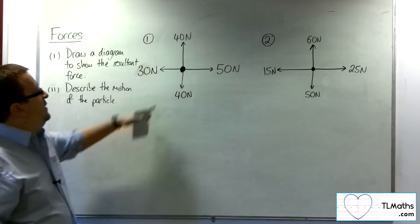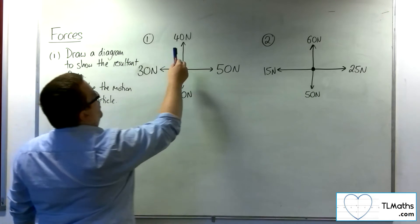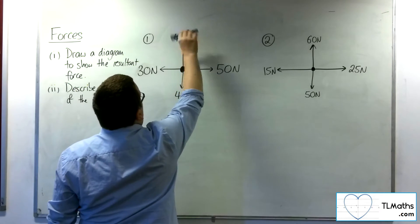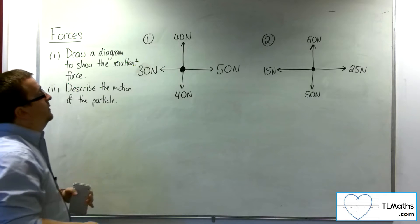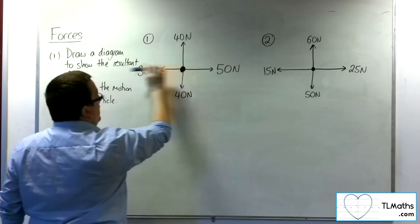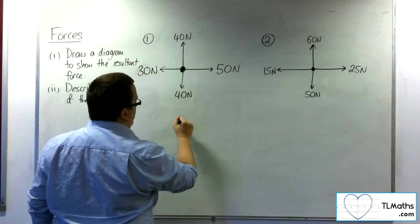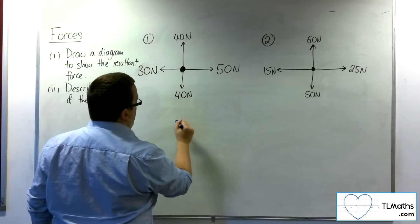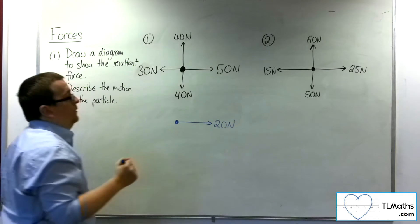Let's have a look at this particle first. So what's happening? This particle is getting pulled at 40 newtons upwards, 40 newtons downwards, so they're going to cancel one another out. Now, it's getting pulled 50 newtons to the right, but only 30 newtons to the left, and so the resultant force would be 20 newtons to the right.